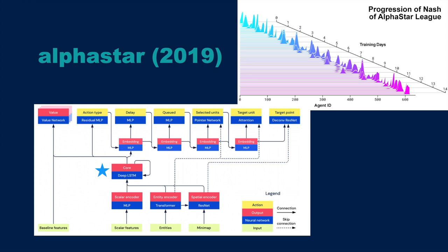The AlphaStar paper trains a bot to play StarCraft. Despite looking complicated, at its core it's a recurrent neural network with fancy inputs and outputs — a large-scale version of the RNN we looked at earlier. The training chart shows each line as a different bot learning a strategy to beat the other players; over time, bots develop strategies to beat bots that have already learned strategies. The result is a set of neural network agents that are competitive with human players.